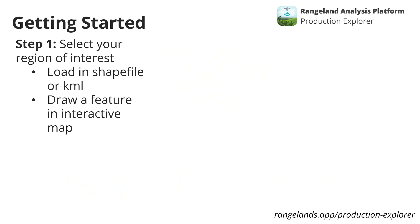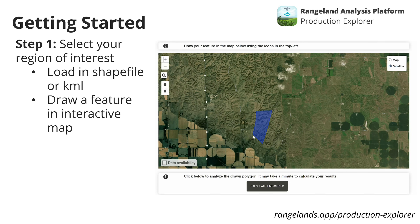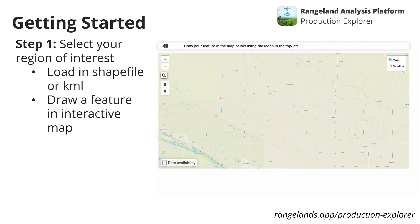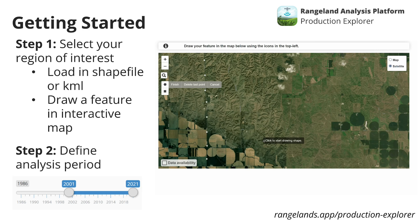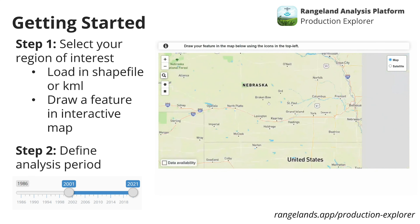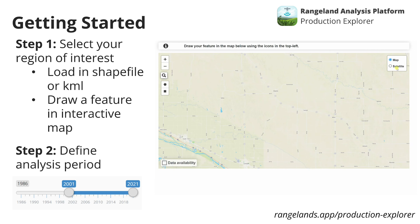With the Production Explorer, we're really diving deeply into this data set. To get started, all you have to do is define your region of interest — you can do that by either uploading a shapefile or a KML from Google Earth, or by drawing a feature interactively in the map. Then click 'Calculate Time Series' and the app will retrieve the data for your analysis. You can also alter the analysis period; by default we look at the most recent 20 years, but you can change it to 35 years or 10 years as needed.